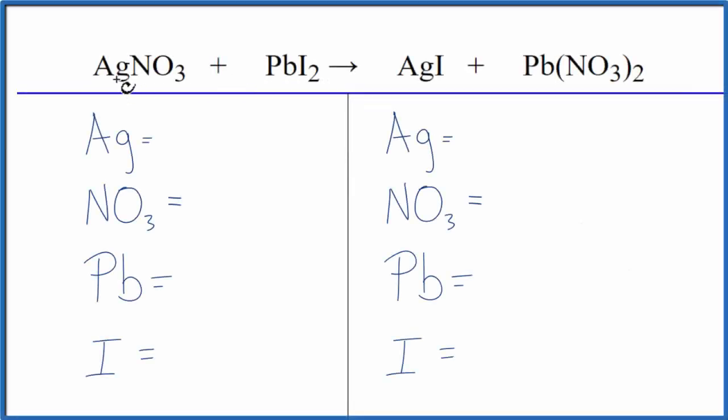In this video, we'll balance the equation AgNO₃ plus PbI₂, silver nitrate plus lead 2 iodide. Let's count the atoms up.